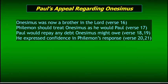Paul gives various reasons and observations for Philemon to consider regarding Onesimus. Onesimus was now a brother in the Lord — he wasn't just a slave, he's a brother; they're both Christians. So Paul encouraged Philemon to treat Onesimus like he would treat Paul or any other Christian. He said he would repay any debt that Philemon might owe, and expressed confidence that Philemon would respond appropriately.